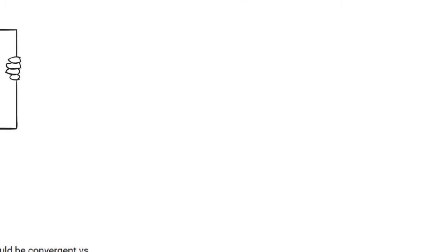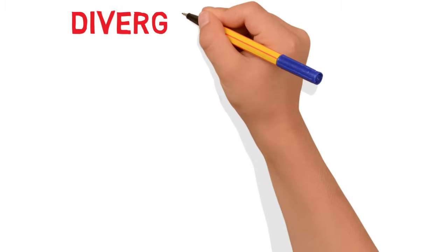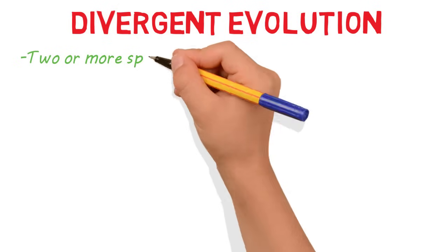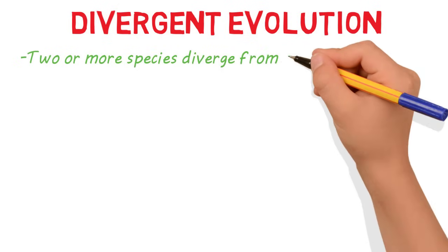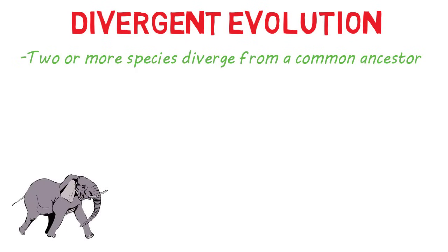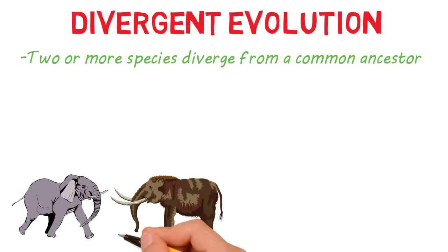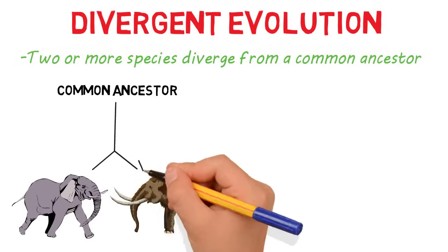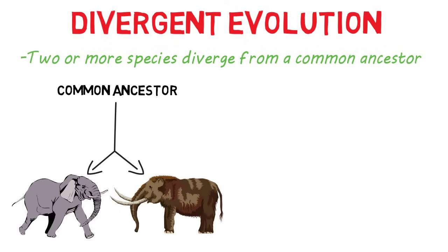Let's talk about divergent evolution first. In divergent evolution, two or more distinct species share a common ancestor from which they both diverge. A common example is the modern elephant and the woolly mammoth — they share a common ancestor and yet evolved into two different species.